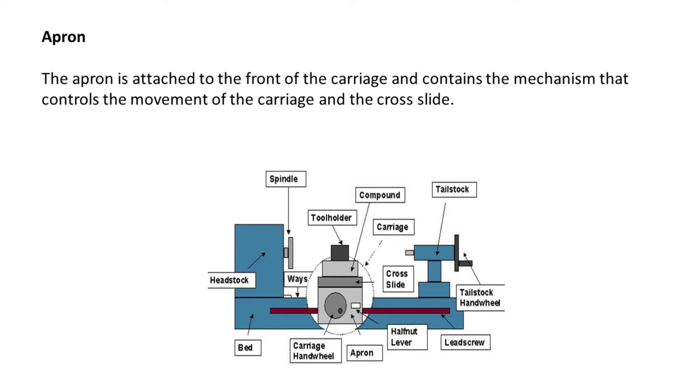Apron. The apron is attached to the front of the carriage, and contains the mechanism that controls the movement of the carriage and the cross-slide.